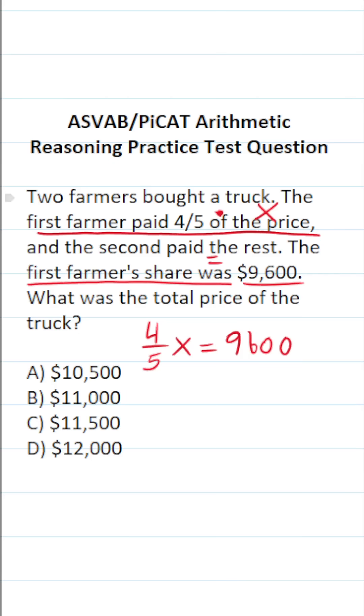Just like that, we translated these statements into an equation where X represents the total price of the truck. It says four-fifths of X, that is the four-fifths the first farmer paid, is equal to $9,600. All we have to do is solve for X.